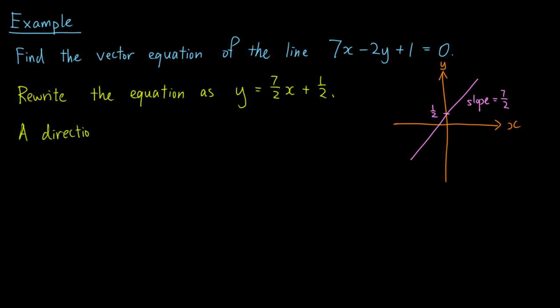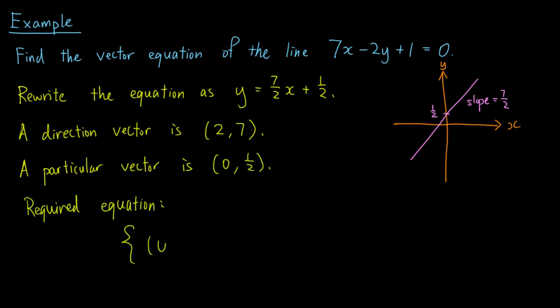In this case, a direction vector for the line is (2,7), because indeed, the slope of the line being 7/2 means that whenever the x-coordinate is increased by 2, the y-coordinate is increased by 7. Also, a particular vector can be given by the y-intercept, in other words, (0,1/2). So, the required equation is (0,1/2) + λ(2,7), where λ is a real number.